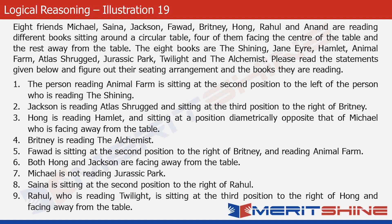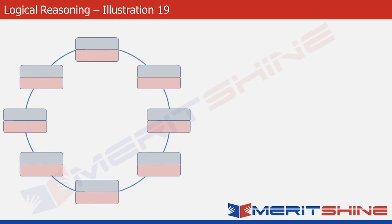Let's proceed with solving the problem now. The first step is to make a circular structure with eight sets of two boxes. We'll write the names in the upper part of the boxes and the books they are reading in the lower part. Let's proceed with the statements now.